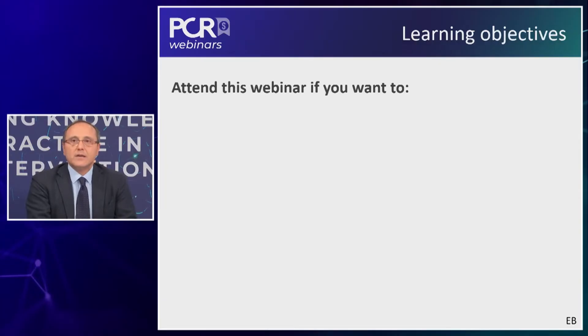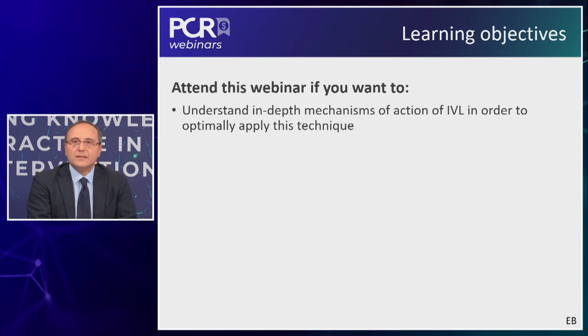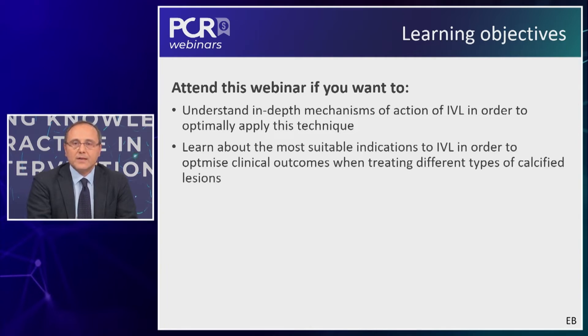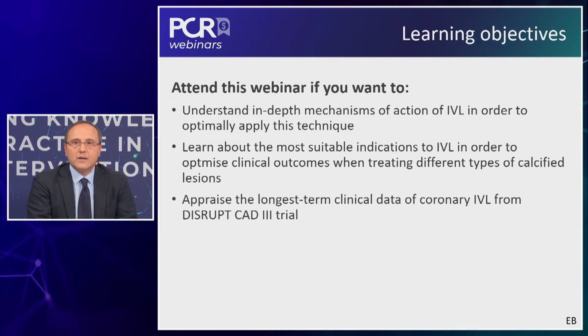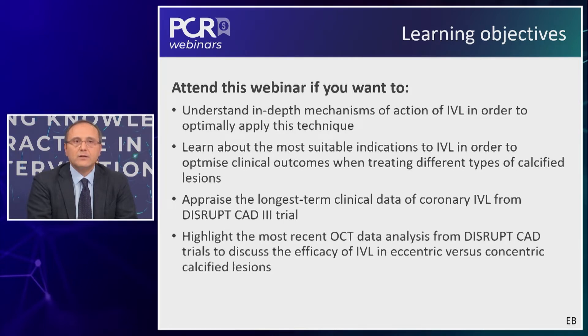This afternoon I'll try to address with you some learning objectives. We are here to discuss and understand in-depth mechanisms of action of intravascular lithotripsy in order to optimally apply this technique. We aim at learning about the most suitable indications to IVL to optimize clinical outcomes when treating different types of calcified lesions. We would also like to appraise the longest-term clinical outcome data of coronary intravascular lithotripsy from the DISRUPT-CAD-3 trial, and highlight the most recent OCT data analysis from DISRUPT-CAD trial series to discuss the efficacy of IVL in eccentric versus concentric calcified lesions.